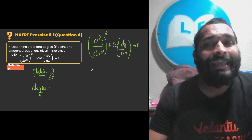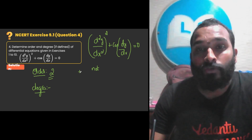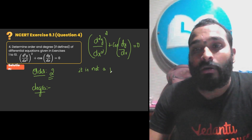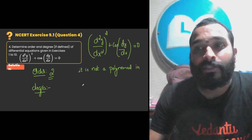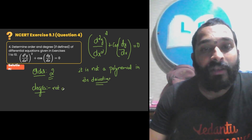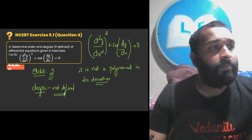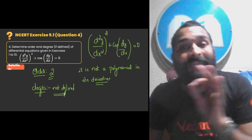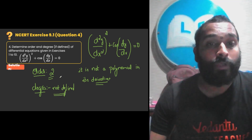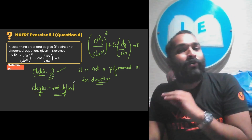We write: it is not a polynomial in its derivatives. Hence, degree is not defined. Whenever it is not a polynomial in its derivatives, we do not define the degree. So you can notice order is 2 and degree is not defined. I hope you have understood these questions, and now you know how to find degree and order of any differential equation given.